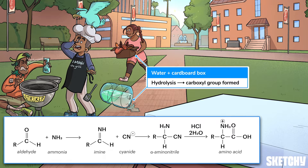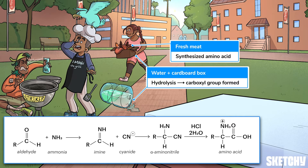To represent that this hydrolysis creates a carboxyl group, we've placed a student with a cardboard box just to the right of some spilled water. With that, you've got a freshly synthesized amino acid — just like these extra fresh meats that definitely weren't scavenged from the back of the communal dorm fridge.